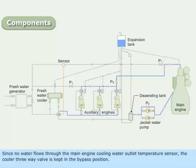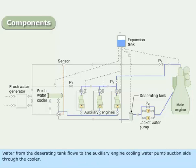Since no water flows through the main engine cooling water outlet temperature sensor, the cooler three-way valve is kept in the bypass position. Water from the de-aerating tank flows to the auxiliary engine cooling water pump suction side through the cooler.